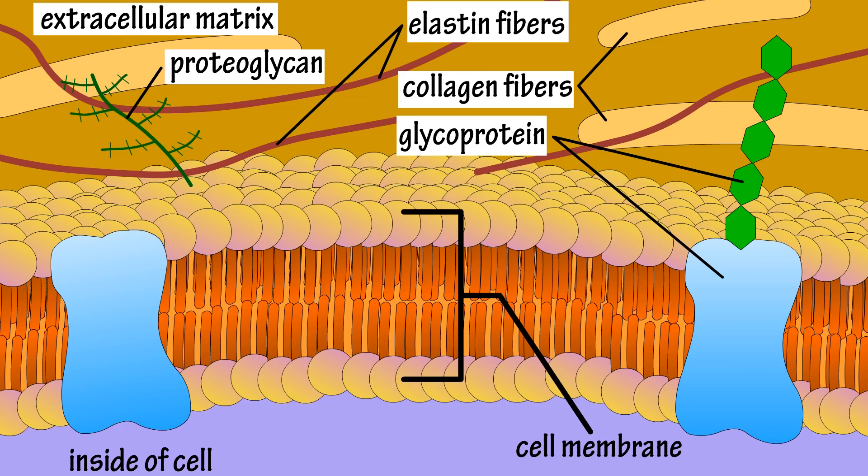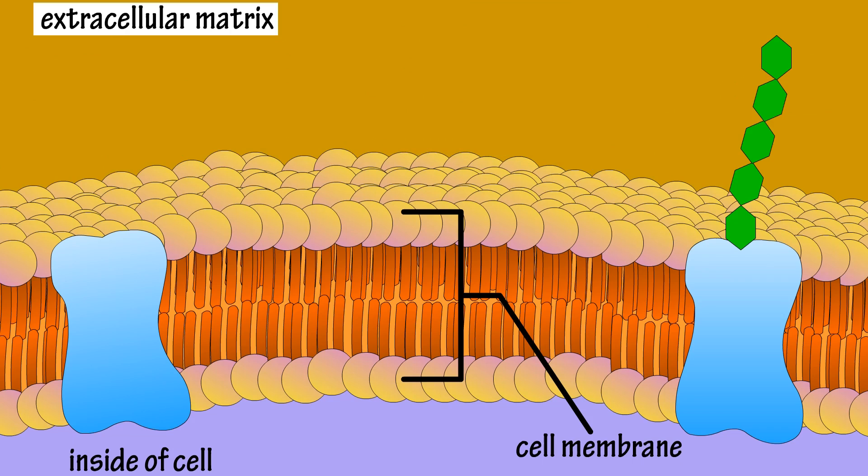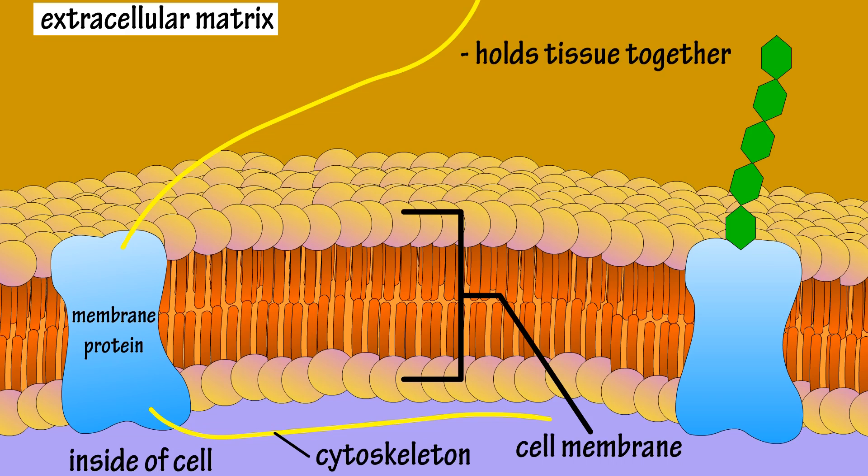The interstitial fluid and extracellular matrix have some important functions. In some tissues, the components of the extracellular matrix are connected to proteins embedded in the plasma membrane of cells, which are connected to components of the cytoskeleton inside of the cell, holding the tissue together and providing structural support of the tissue.